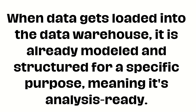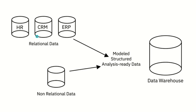As shown in the diagram, there are two different things on the left side: relational data and non-relational data. Traditionally, data warehouses were known to store relational data from transactional systems and operational databases such as CRM, HR, ERP, and finance applications. But with the emergence of NoSQL technologies like MongoDB, non-relational data repositories are also being used for data warehousing.